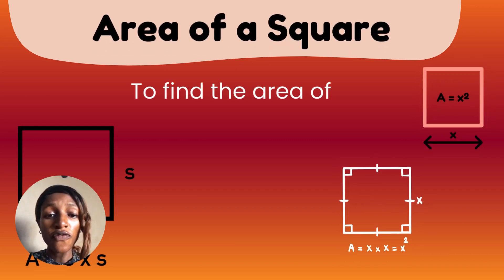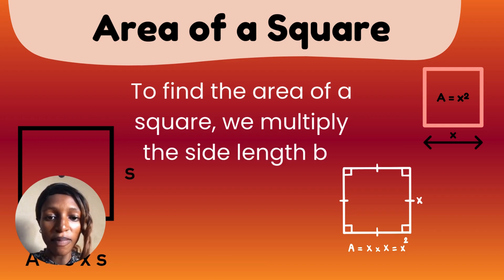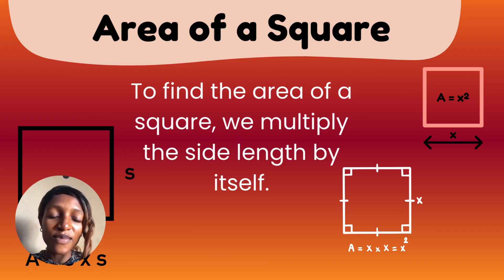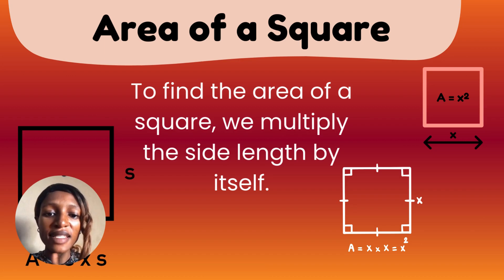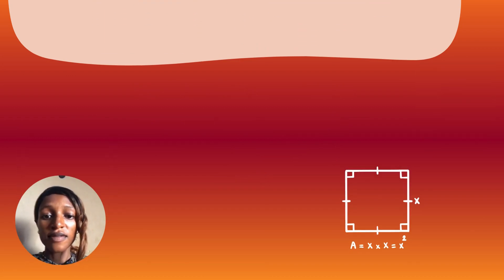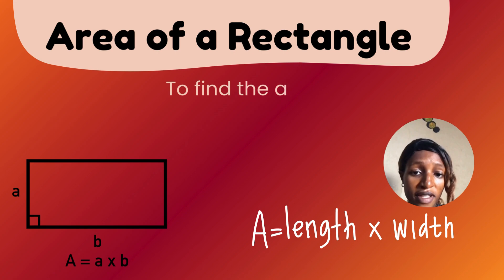Now let's study the area of a square. To find the area of a square, we multiply the side length by itself. A square has the same sizes of length on all sides, as you can see, so we multiply the side length by itself.